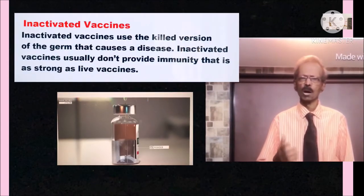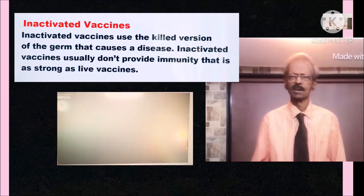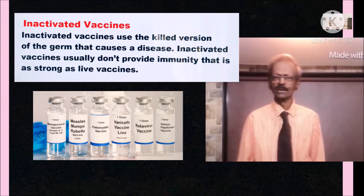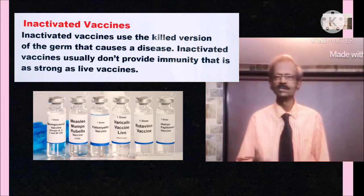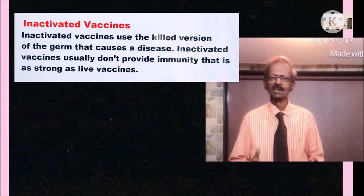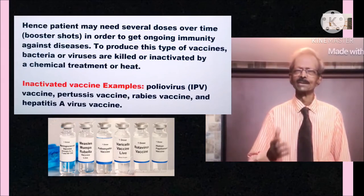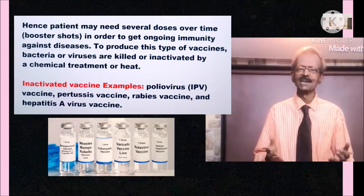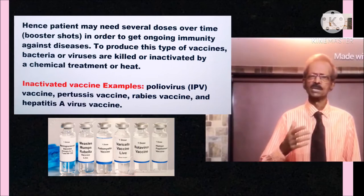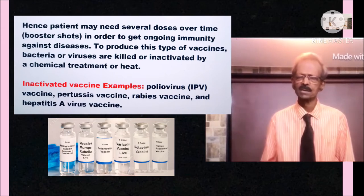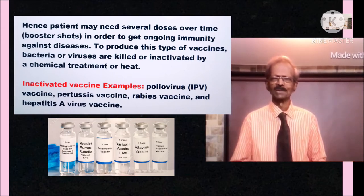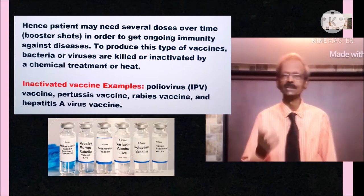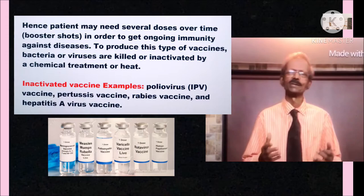Inactivated vaccines use the killed version of the organism that causes a disease. They usually do not provide immunity as strong as live vaccines; hence, patients may need several doses over time, called booster shots, to maintain ongoing immunity. To produce this type of vaccine, bacteria or viruses are killed or inactivated by chemical treatment or at a specific temperature. Examples include polio virus vaccine, pertussis vaccine, rabies vaccine, and hepatitis A vaccine.